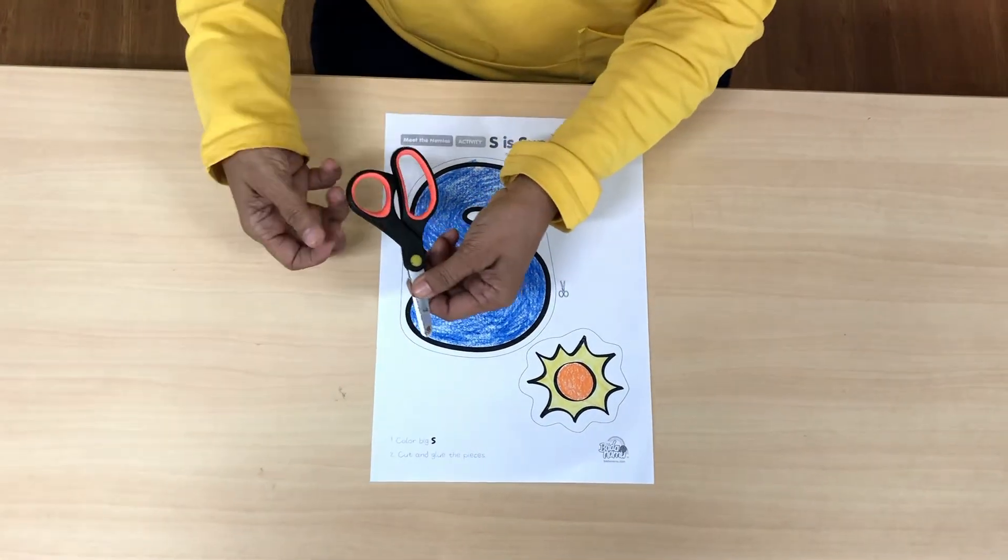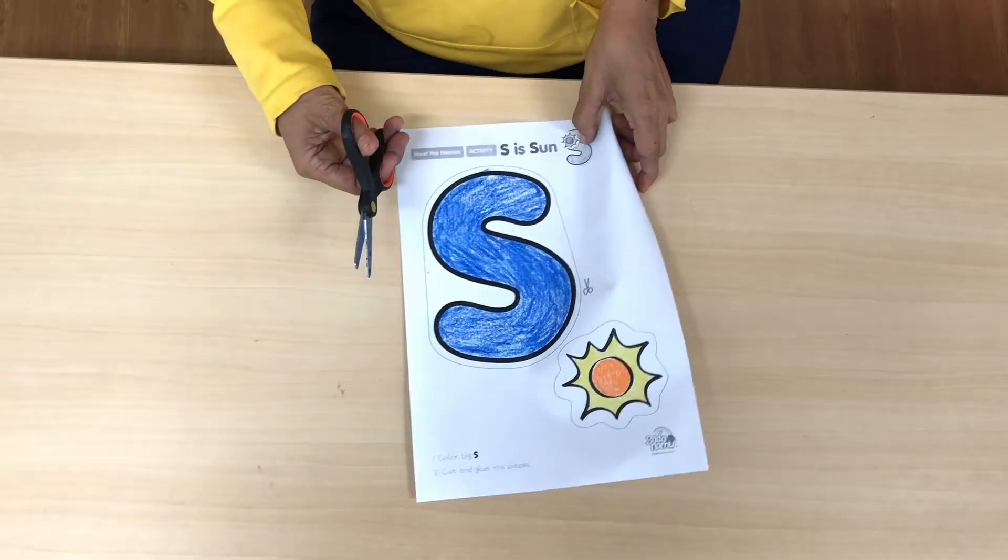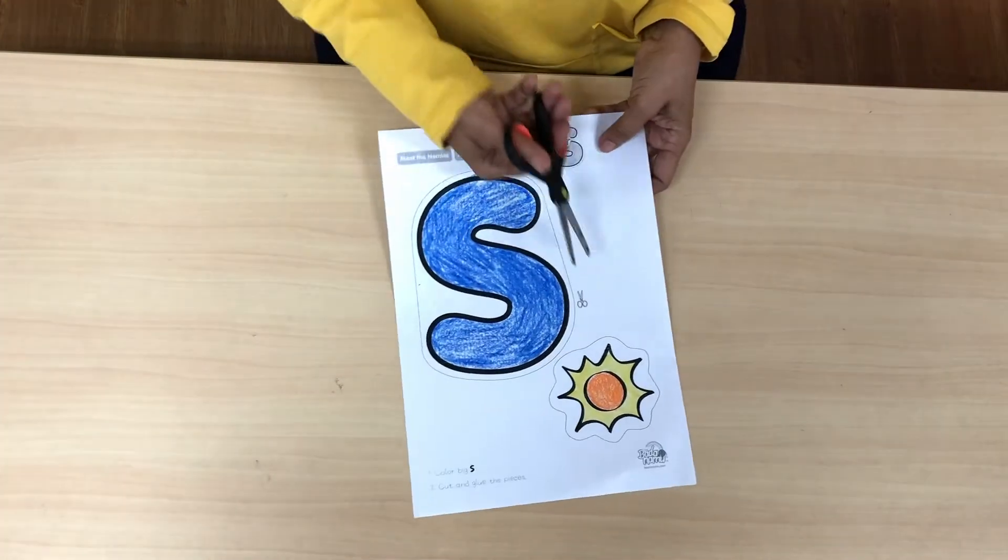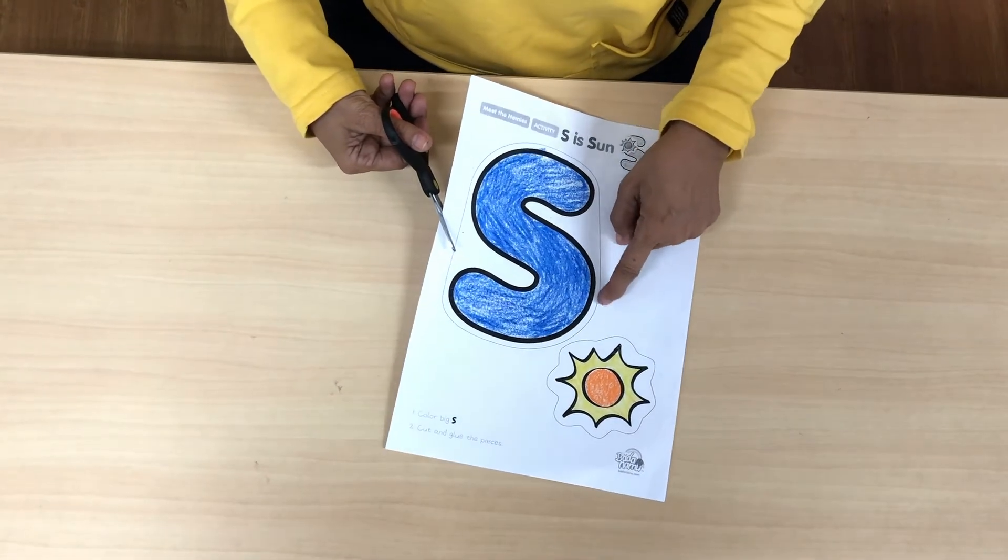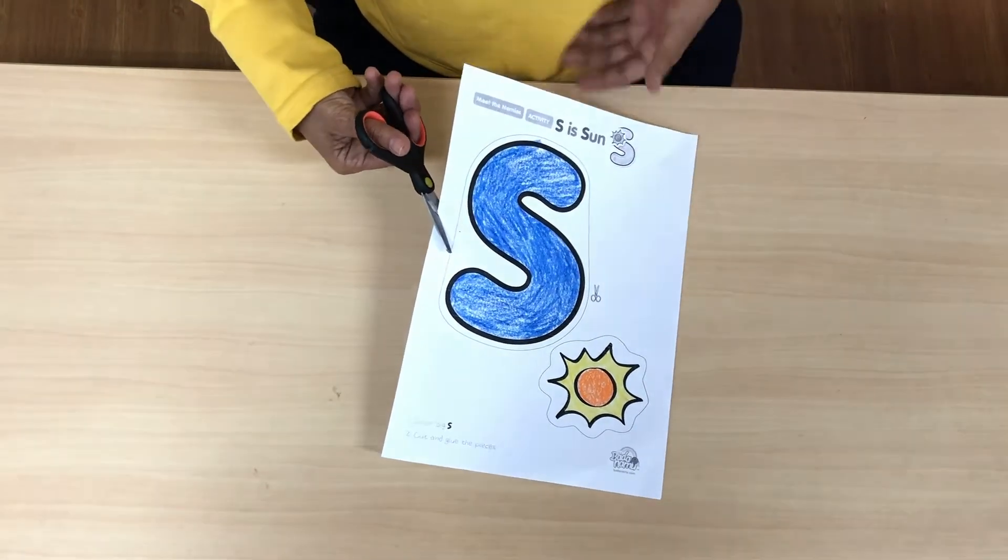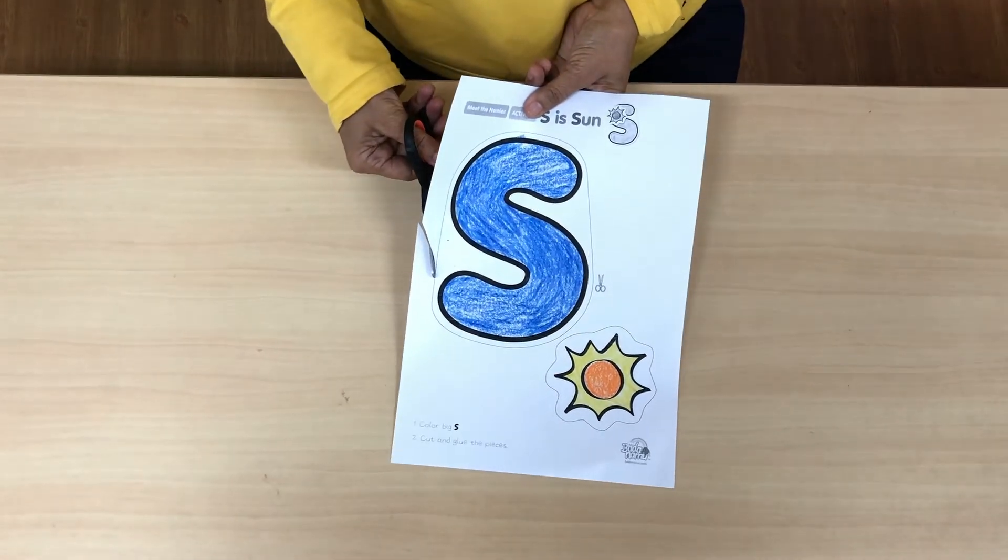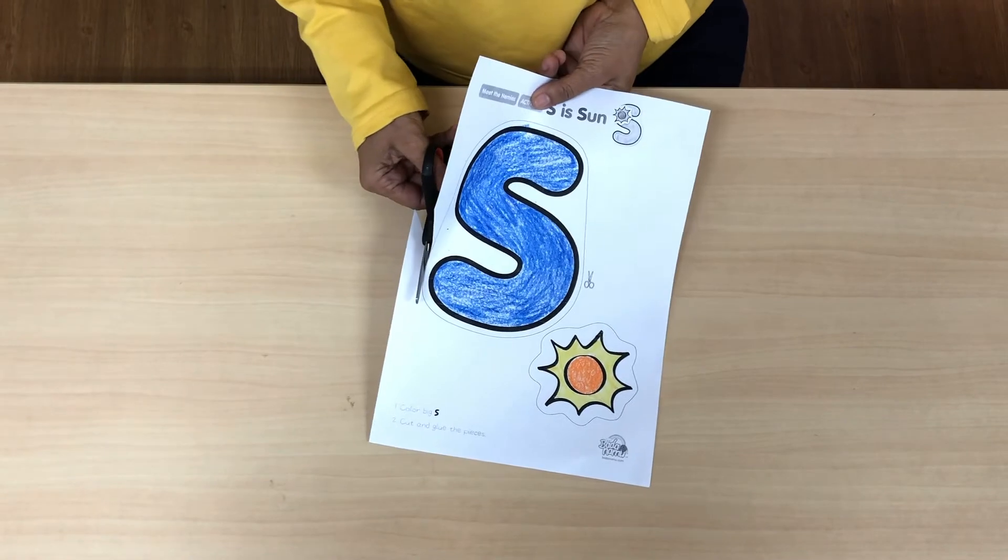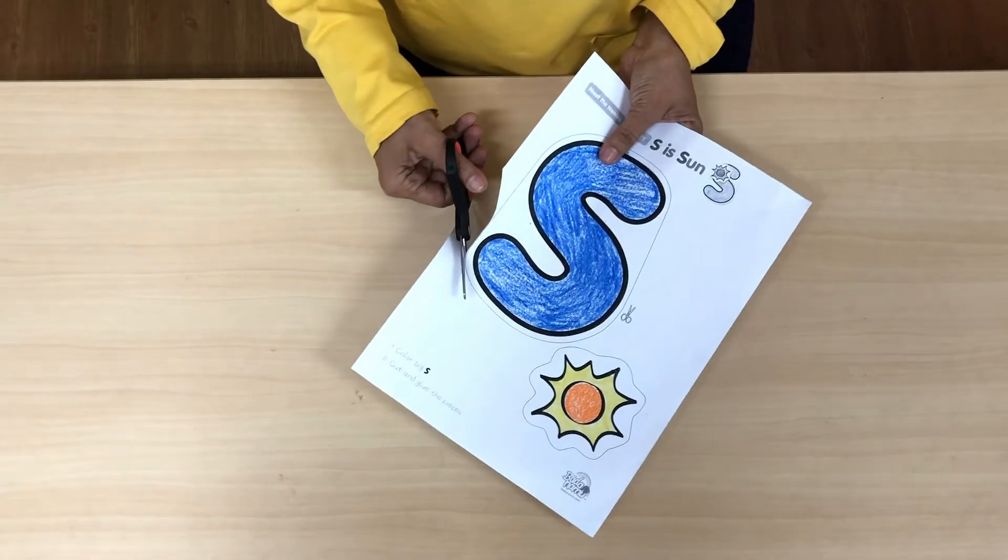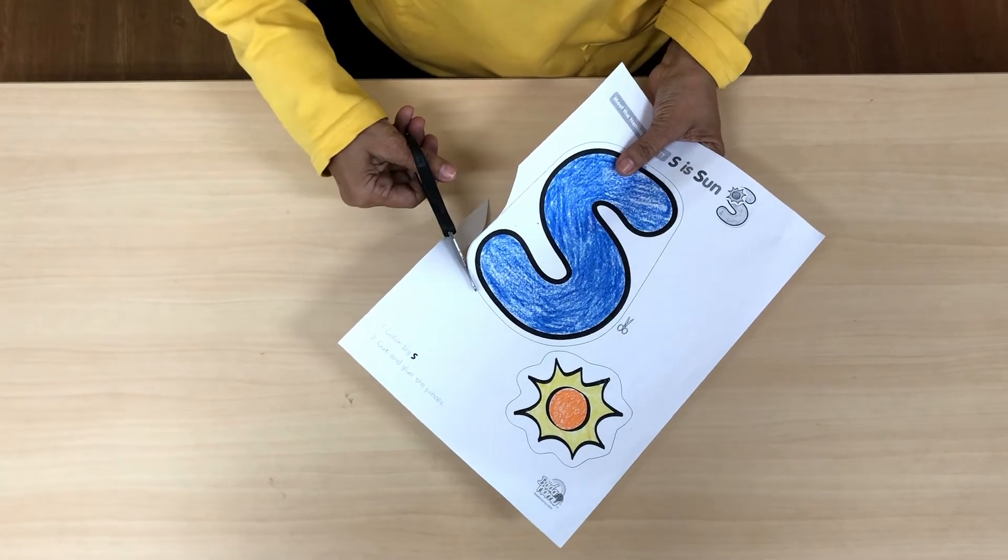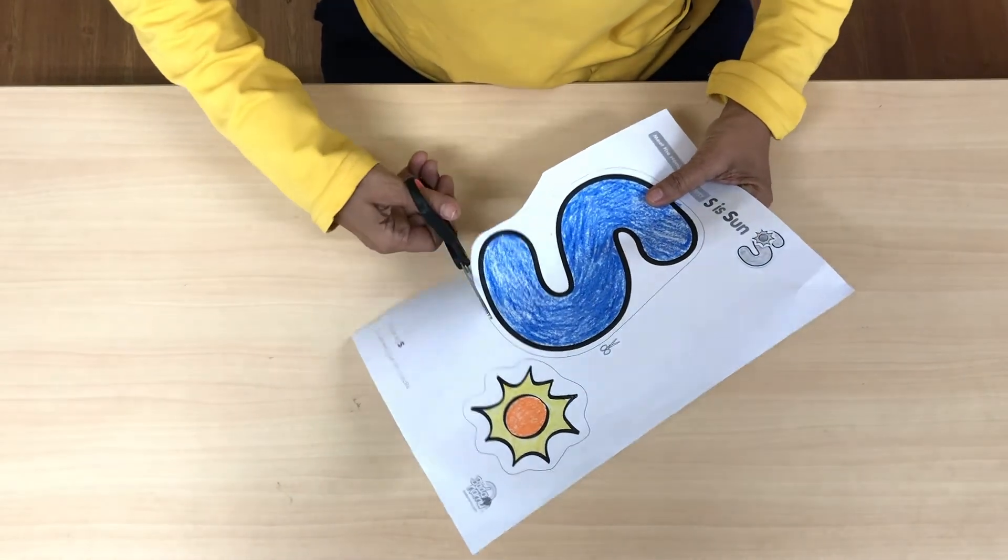Look, this is the scissor. It's okay, you can start from here because it's the easy one. Cut outside the line slowly like this - open, shut them, slow. You can cut following the line, not inside the line but outside the line, slowly.